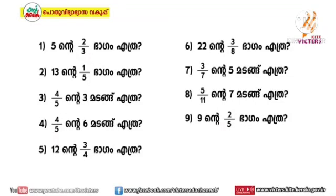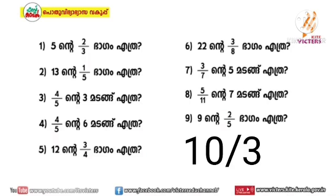How many of us do this class? That's the answer to the 5 and the 2. We can do it like this: 5 x 2. That's the answer. 10 by 3.